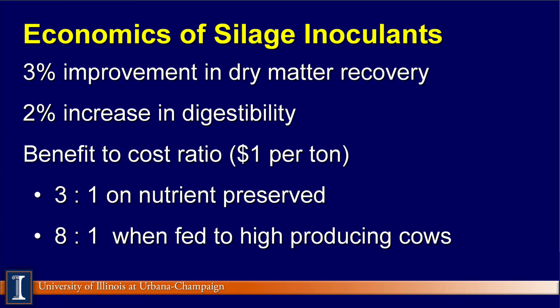Looking at the economics of silage inoculants: using that Washington State dataset — the 3% improvement in dry matter recovery and the 2% increase in digestibility — with a cost of $1 per treated ton of corn silage (which can range from $0.60 to over $3 a ton), the benefit-to-cost ratio using these variables was 3 to 1. If those extra nutrients are fed to high-producing cows, Kansas State says that's an 8 to 1 return on investment.